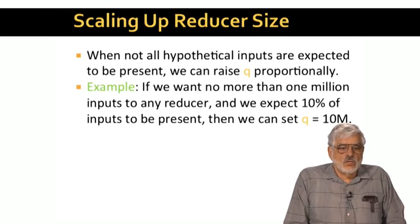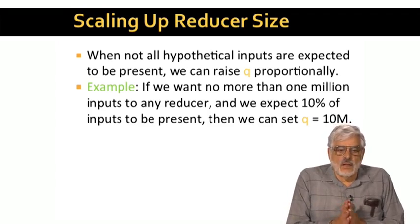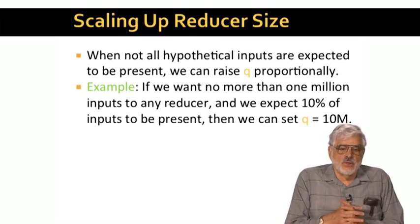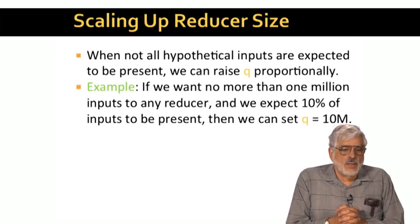For example, suppose that we decide we want no more than a million inputs to any reducer, and that bound is necessary to enable the reducer to do its work in main memory. Suppose we also know that 10% of all the hypothetical inputs will actually be there when we run the algorithm. Then we might decide, design the algorithm with a Q of 10 million, figuring that the 10 million values that might be sent to the reducer, on average only 1 million of them will really be there, and things will work well in main memory.